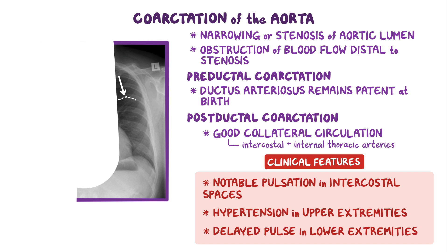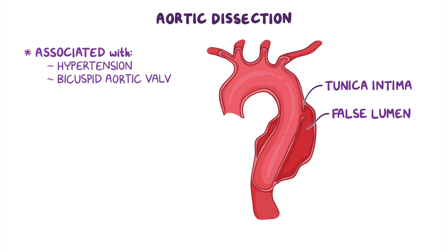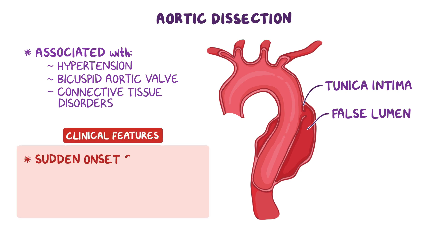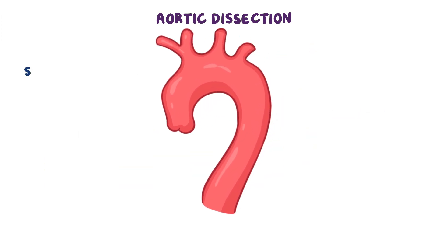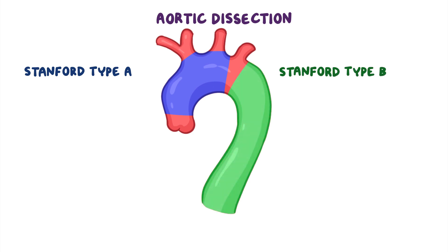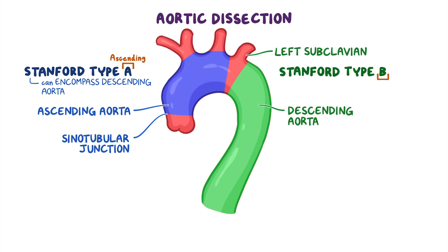The aorta is also susceptible to dissection. Aortic dissection happens when there's a tear in the layer of the aorta called the tunica intima, and this results in a false lumen within the aorta. Aortic dissection is associated with things such as hypertension, bicuspid aortic valve, and connective tissue disorders, where individuals may present with sudden onset chest pain radiating to the back and unequal blood pressures between the arms. There are two types of dissection: Stanford type A and Stanford type B. Type A is a dissection that involves any part of the ascending aorta — think of A for ascending aorta. These typically start at the sinotubular junction and extend to the aortic arch, but can also encompass the descending aorta. Type B refers to all other dissections involving only the descending aorta and originate close to the left subclavian — think below the subclavians.